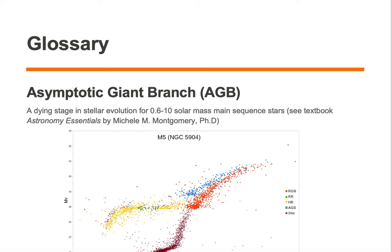The Asymptotic Giant Branch, or AGB for short, is a dying stage in stellar evolution for 0.6 to 10 solar mass main-sequence stars.